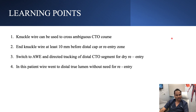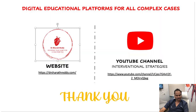Learning points from this case: knuckle wire can be used to cross ambiguous CTO courses. End knuckle wire at least 5 to 10 mm before distal cap or re-entry zone. Switch to antegrade wire escalation after knuckle wire is ended, and use directed tracking of distal CTO segment for a dry re-entry. In this case, wire went into distal true lumen without need for re-entry. You can subscribe to our channel Interventional Strategies to get updates on such cases in future.